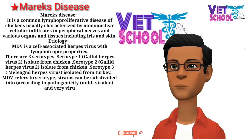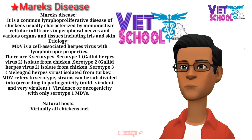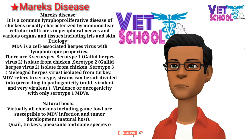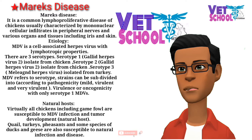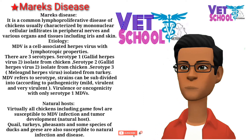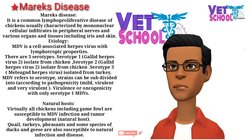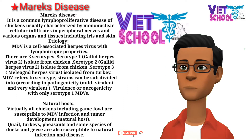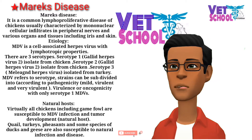Etiology: Marek's disease virus is a cell-associated herpes virus with lymphotropic properties. There are three serotypes: serotype 1, Gallid herpesvirus isolated from chicken; serotype 2, Gallid herpesvirus isolated from chicken; serotype 3, Meleagrid herpesvirus isolated from turkey. Marek's disease virus refers to serotype 1 strains, which can be subdivided according to pathogenicity into mild, virulent, and very virulent.